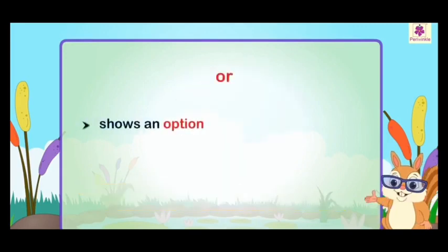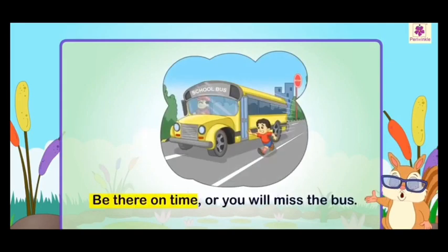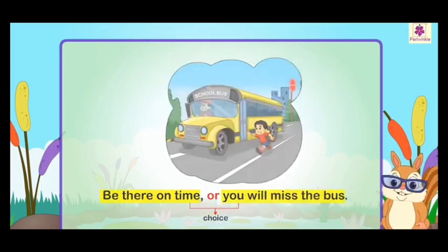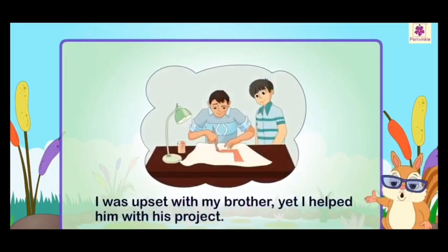OR shows an option — it presents an alternative idea or choice. For example: 'Be there on time, or you will miss the bus.' This is the choice: if you are there on time, you won't miss it; otherwise you will.